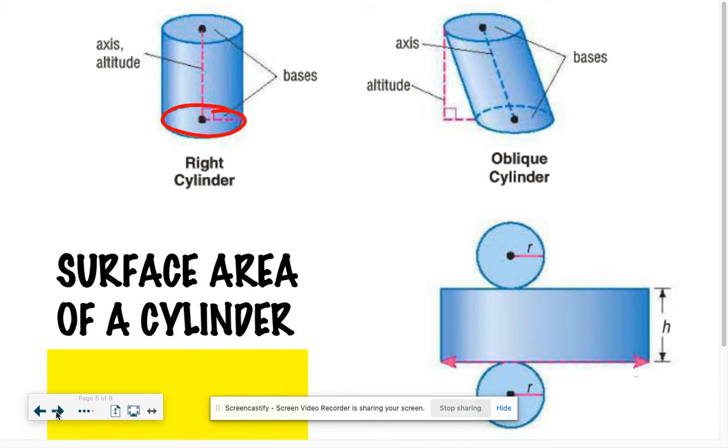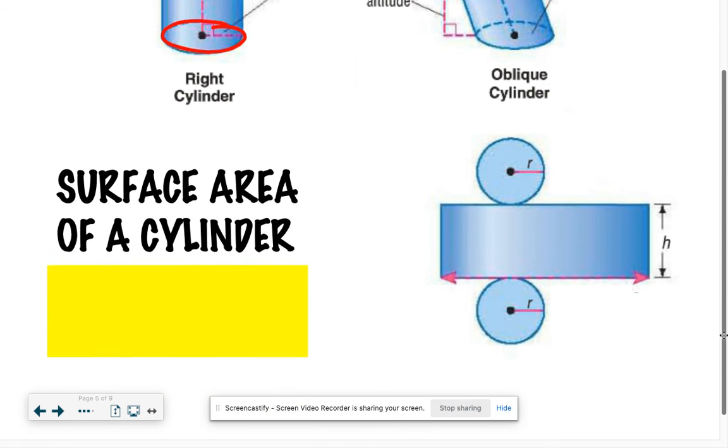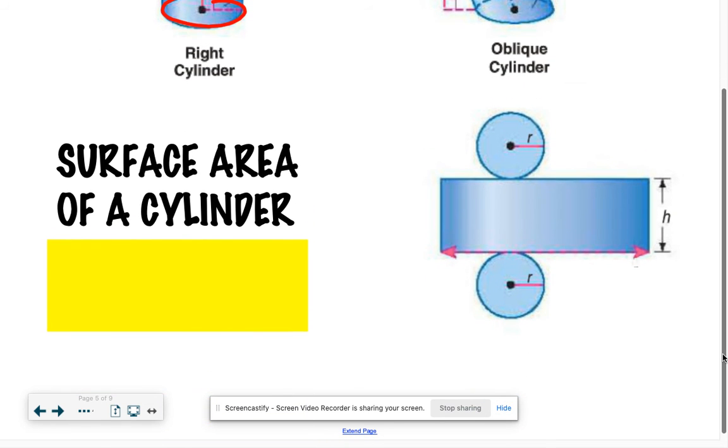And our base shape is a circle, which is awesome. We love finding the area of a circle. And then if we wanted to find our lateral area - if we look here at this net, if we unravel our cylinder, this is what it would look like. Again, we have our two circles, so we know we're going to have to have the area of the circle somewhere in our formula.